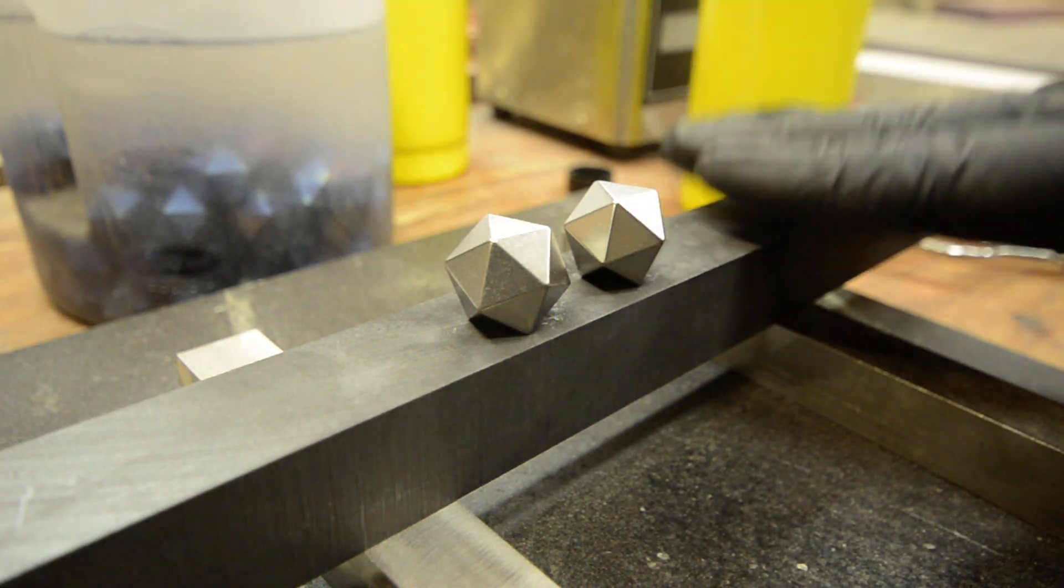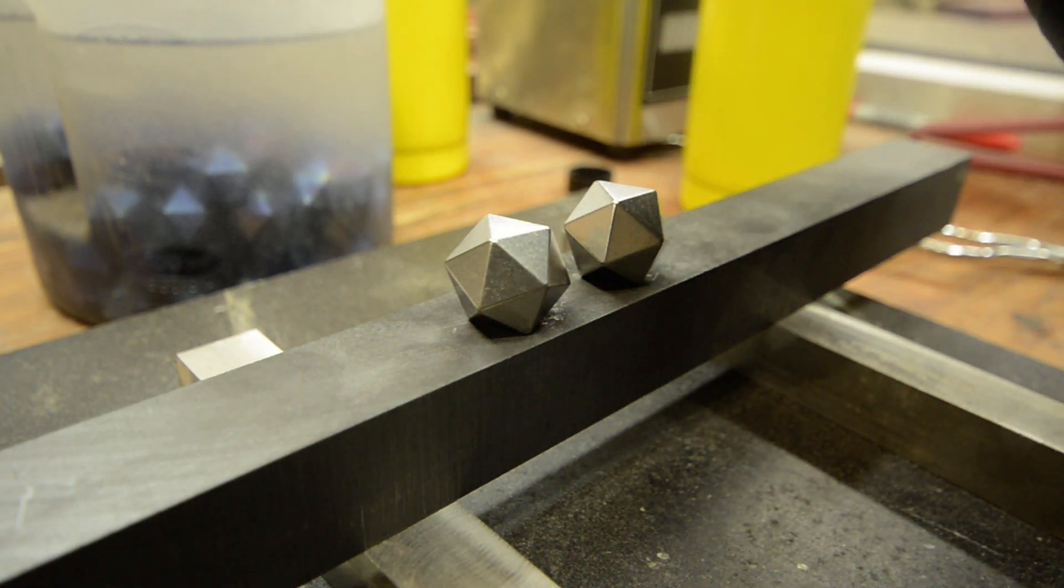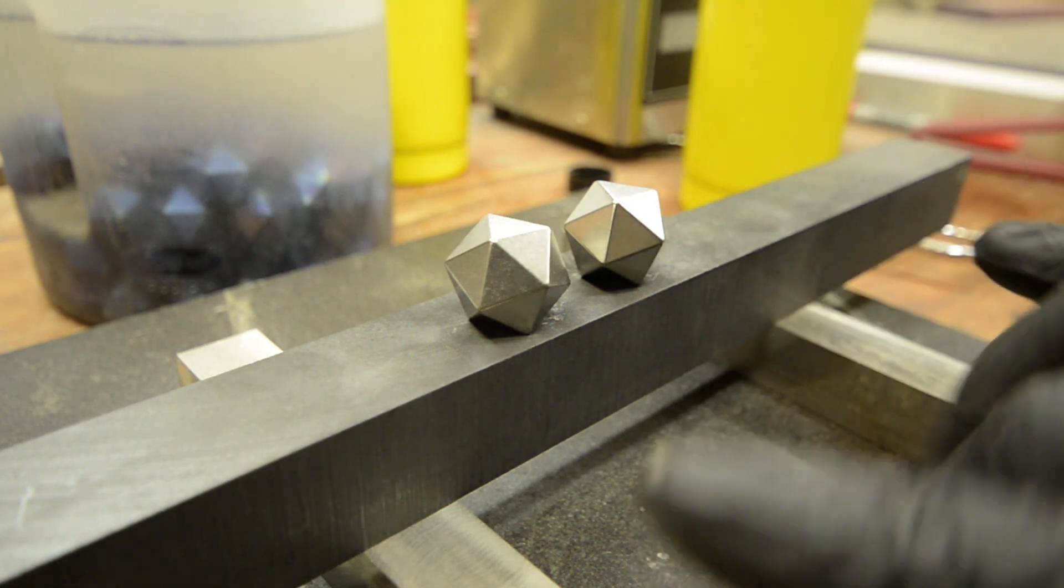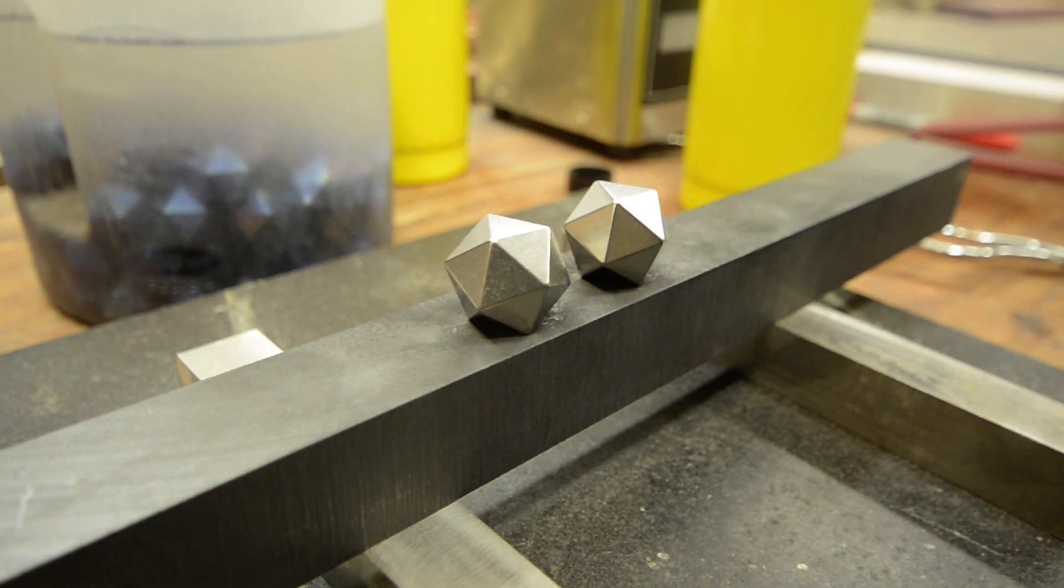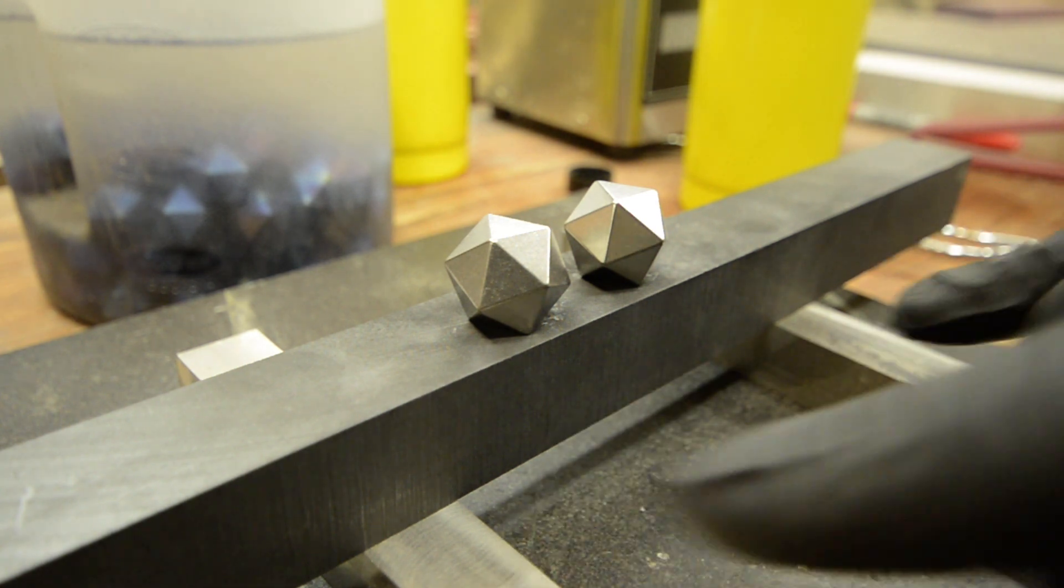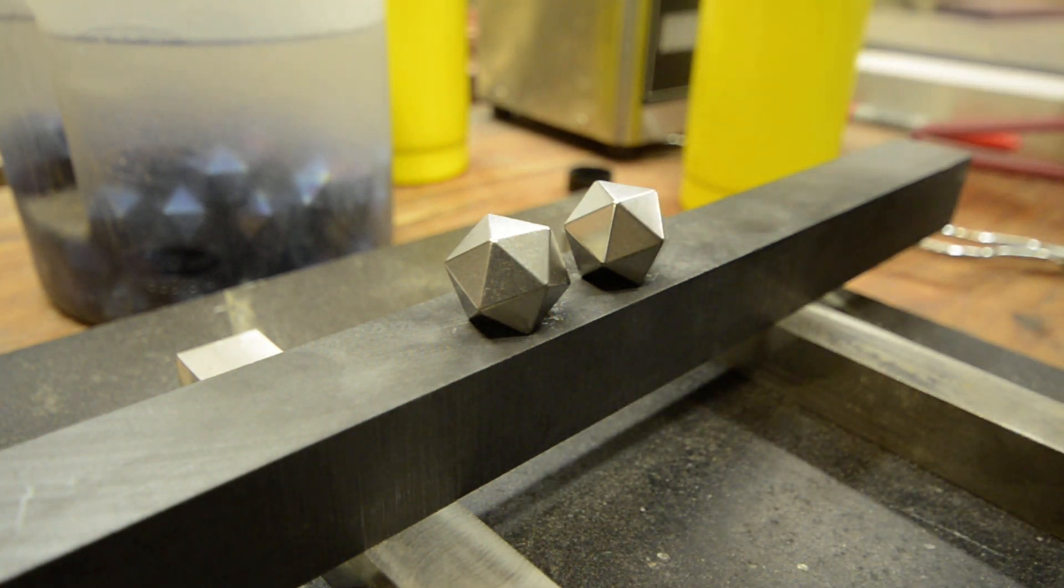So we've got a graphite block sitting here which allows us to put heat just into the dice. That sits elevated on a pair of metal blocks so that we get an air gap all the way around it to help insulate.